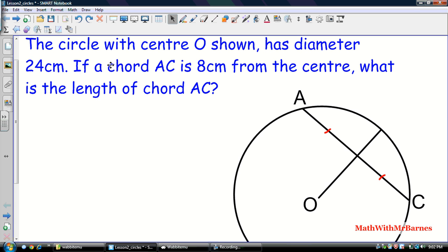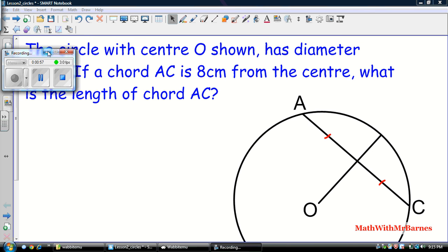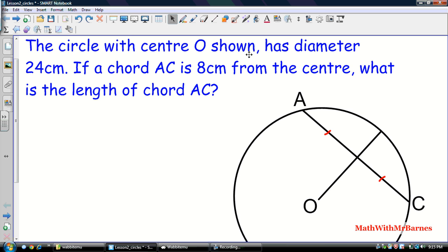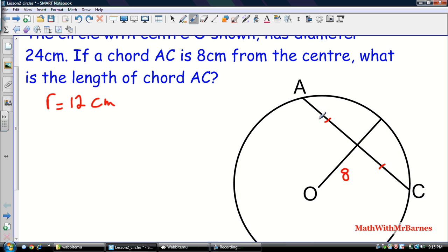The circle with center O shown has a diameter of 24 centimeters. So the diameter of 24 centimeters, that must mean that the radius is 12. So my radius is equal to 12 centimeters. And it says if a chord AC is 8 centimeters from the center. So here's the center O and here's the chord AC that goes from one end of the circle to the other. So that's 8 centimeters. So what is the length of chord AC? We're looking for this length.